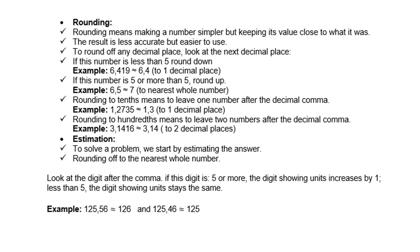Rounding. Rounding means making a number simpler but keeping its value close to what it was. The result is less accurate but easier to use. To round off any decimal place, look at the next decimal place. If this number is less than 5, round down.